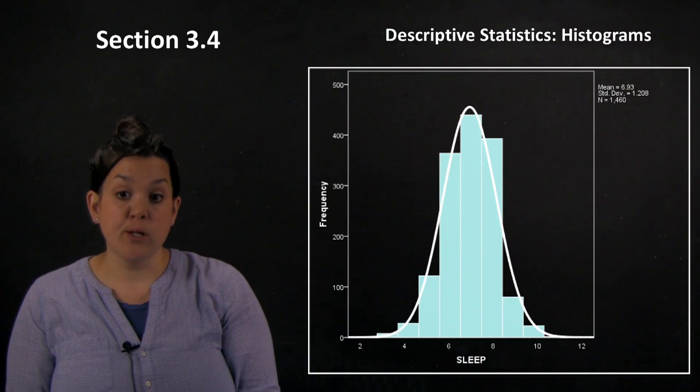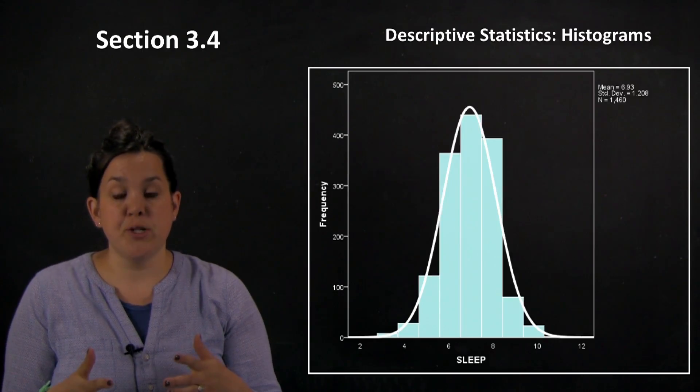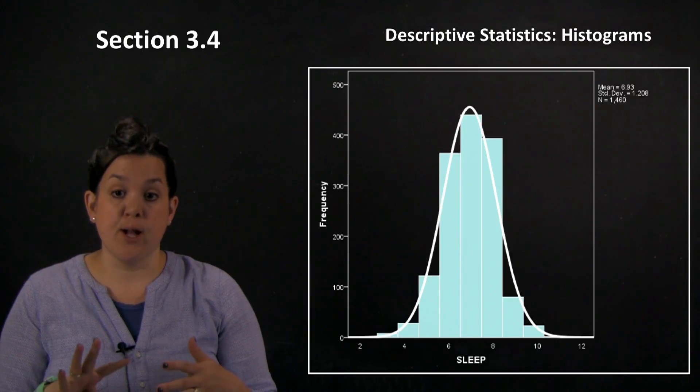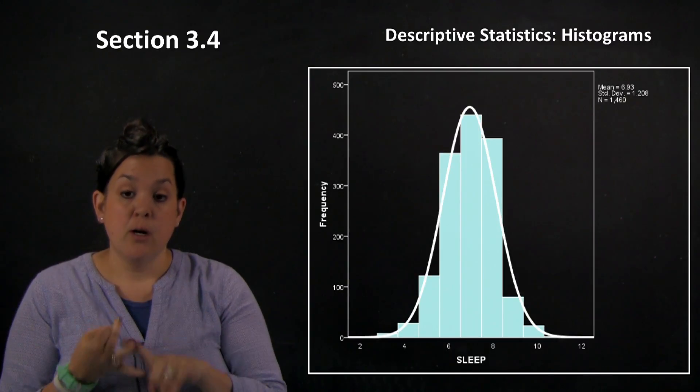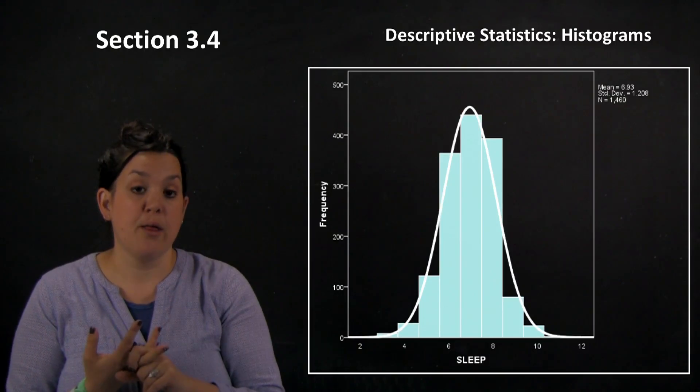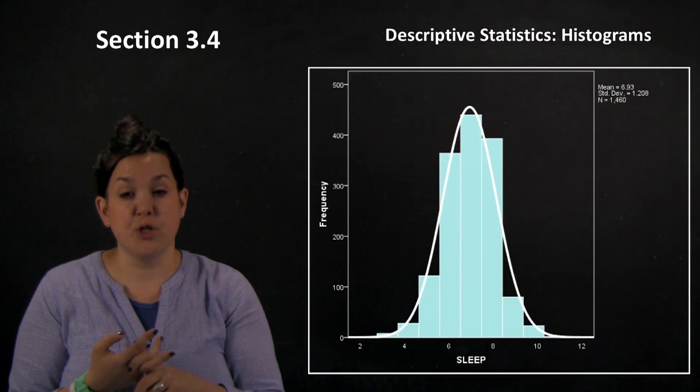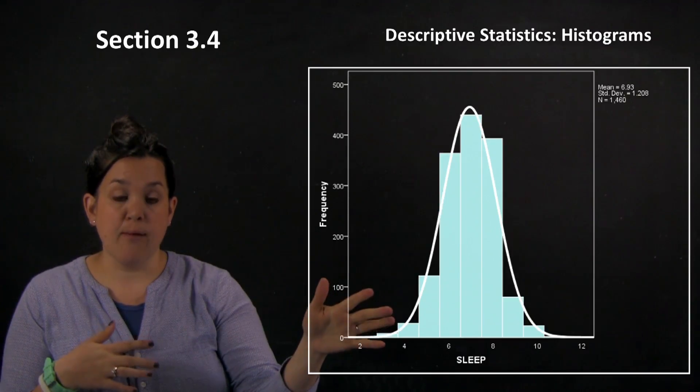When we looked at Section 3.2, we were looking at different ways to describe a distribution. We talked about four areas that are necessary for describing a distribution. One area is the center, a second is variability or how much spread there is, a third area is going to be the shape, and the fourth area is outliers. So let's look at that for this histogram.